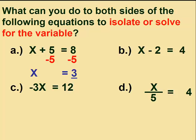In equation b, what do we need to do to get rid of the minus 2? We will add 2 to both sides, leaving us with x equals 4 plus 2, or 6.